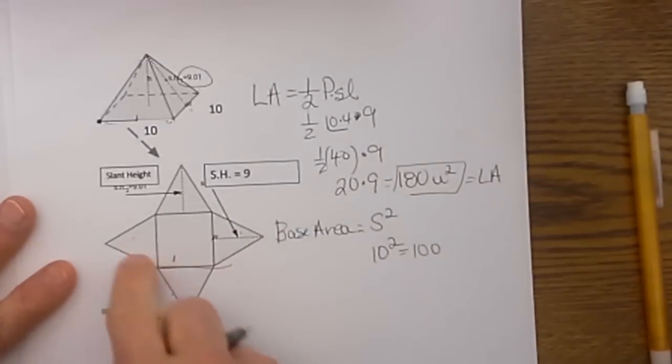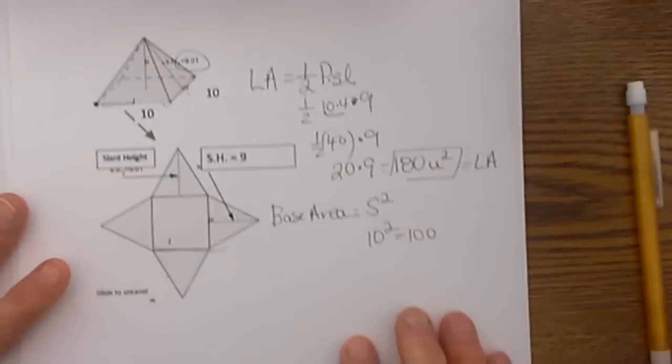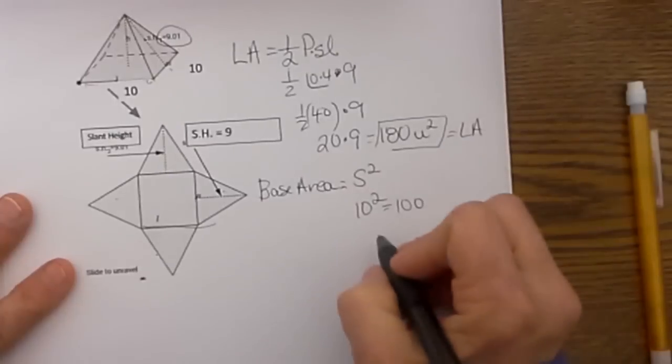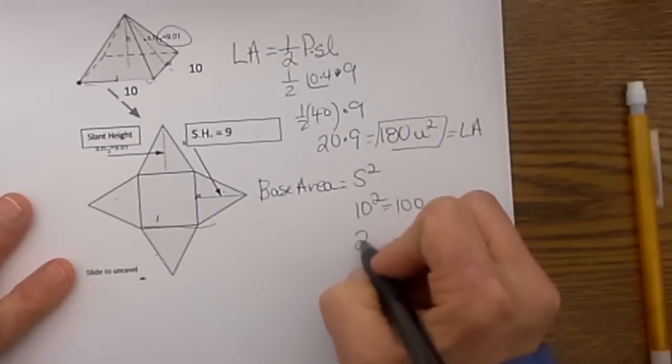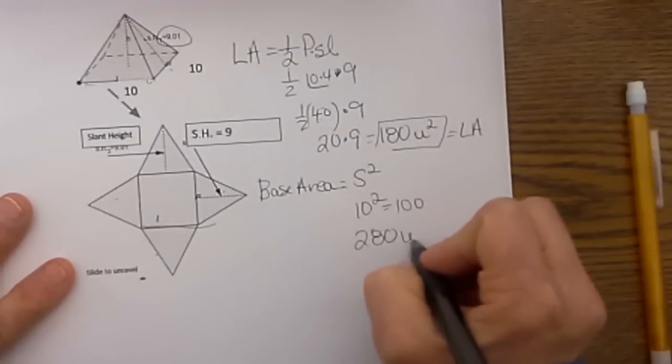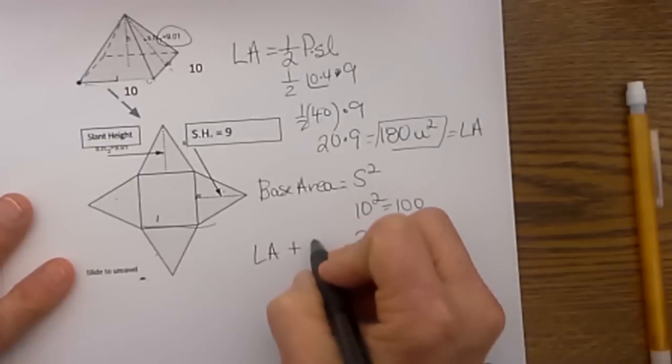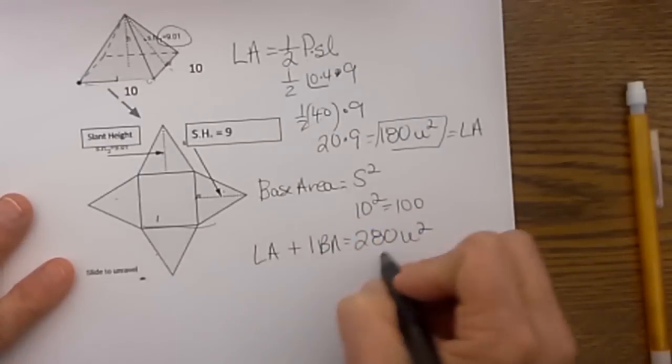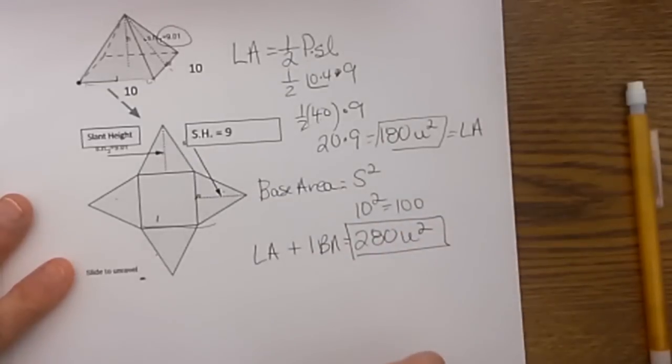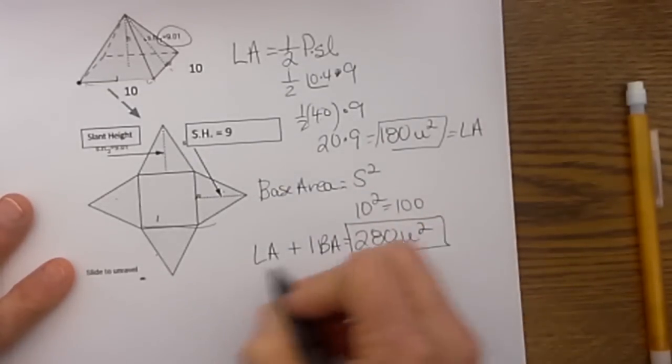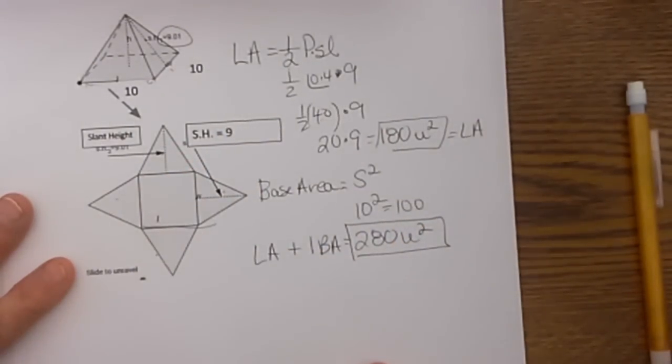So how many bases do I have? On a pyramid I only have one base. So I am going to add 100 to 180 and that is going to give us 280 square units. So this last part is to take my lateral area plus one base area and add it together to get my total surface area. And that is the total surface area of that pyramid.